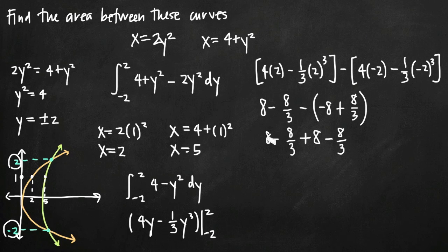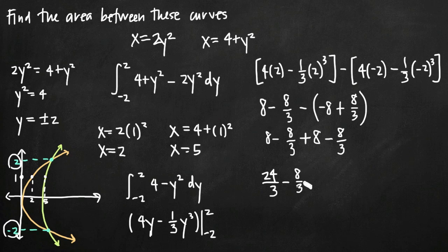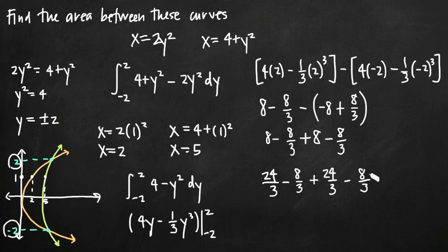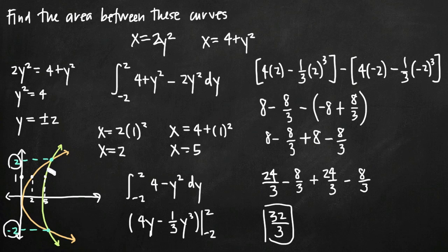Finding a common denominator of 3, we multiply each 8 by 3 over 3 to get 24 thirds. So we have 24 thirds minus 8 thirds plus 24 thirds minus 8 thirds. That gives us 24 plus 24 equals 48, minus 16, equals 32. So our final answer is 32 thirds. This represents the area between the two curves between y equals negative 2 and y equals positive 2.